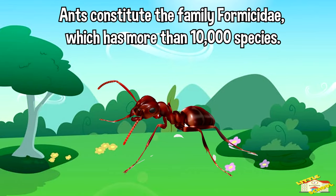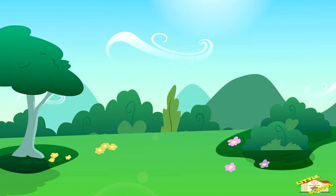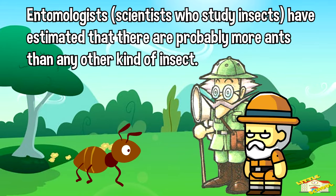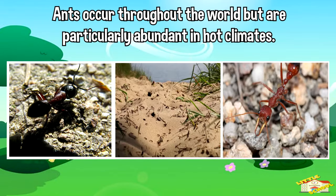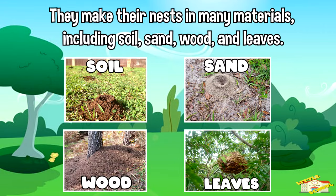Ants constitute the family Formicidae, which has more than 10,000 species. Entomologists, scientists who study insects, have estimated that there are probably more ants than any other kind of insect. Ants occur throughout the world but are particularly abundant in hot climates. They make their nests in many materials including soil, sand, wood, and leaves.